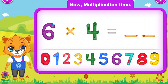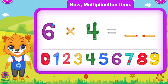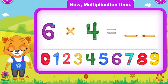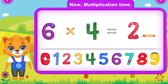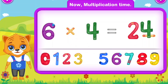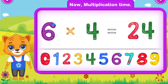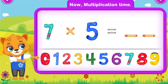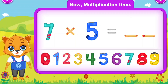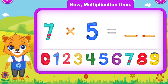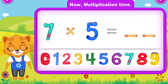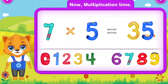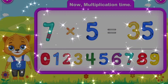Six multiply by four is equal to twenty-four. Well done! Seven multiply by five is equal to thirty-five. Perfect!